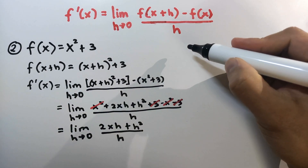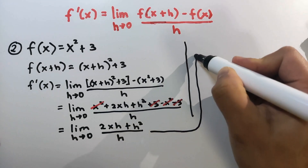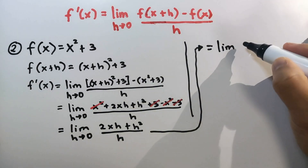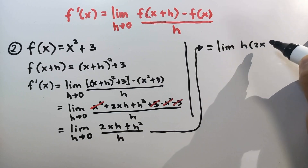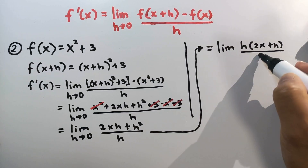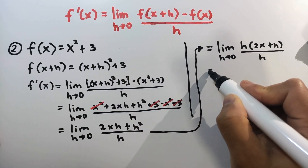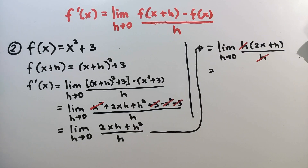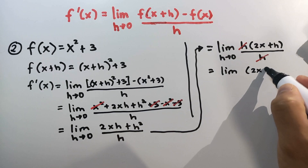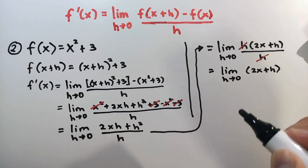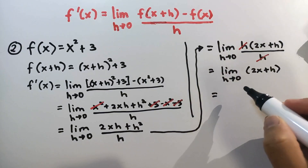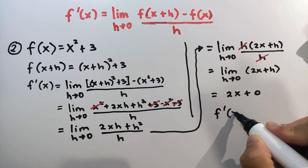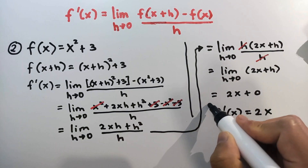Next is to factor out h in the numerator using common monomial factoring. So we have the limit of h times 2x plus h over h as h approaches 0. We cancel h, then evaluate the limit by substituting 0 for h: we have 2x plus 0. So the final answer — the derivative of the function — is equal to 2x. This is our final answer.